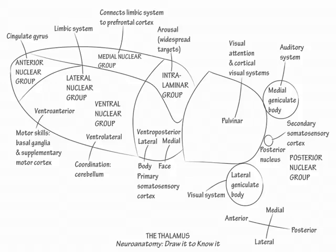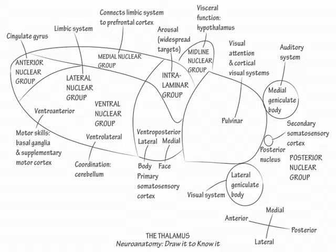Next, draw the midline nuclear group along the ventromedial portion of the thalamus in the midline of the central nervous system. It is involved in visceral function, just as is its neighbor, the hypothalamus.